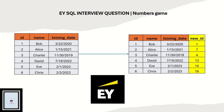Hello everyone, welcome back to my channel Data Sculptor. Today we are going to see another question in this video. We have a table called 'employee' with columns: id, name, and joining date.